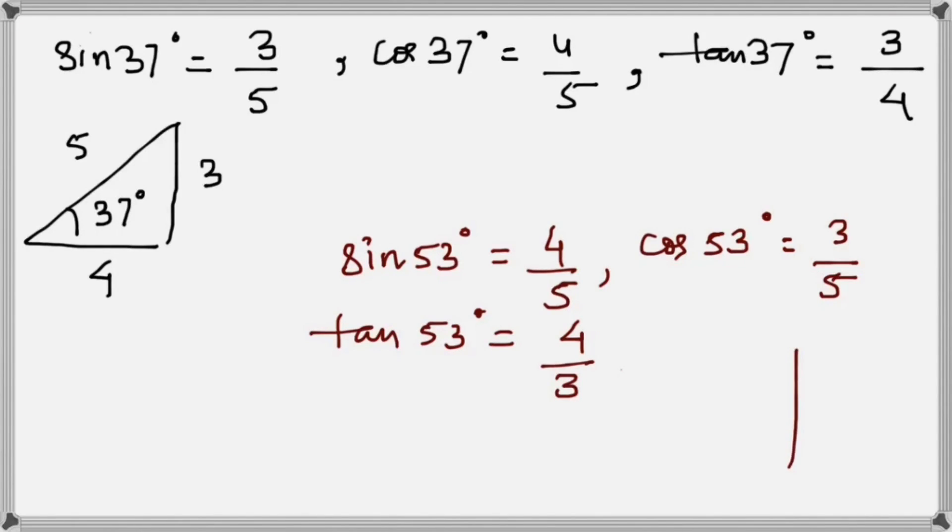For this we can remember using a triangle where the front side is 4, the bottom is 3, this side is 5, and the angle is 53°. Now if you pay attention, 37° and 53° are complementary to each other, and therefore the values are reversed.